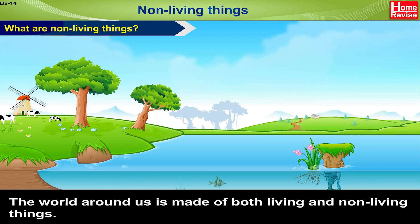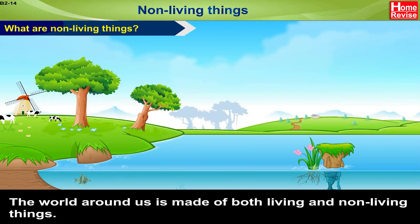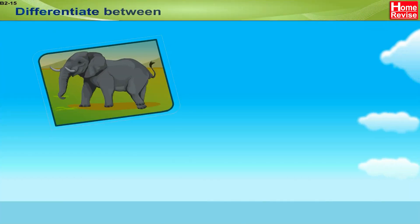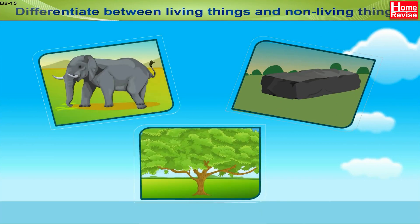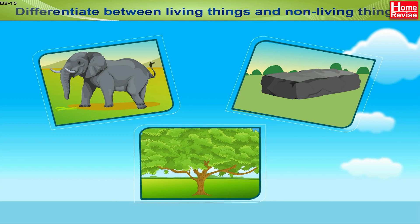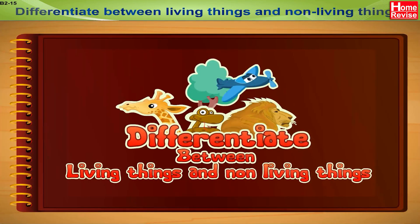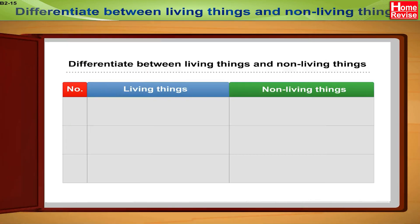The world around us is made up of both living and non-living things. The main differences between living and non-living things are listed in the table here.